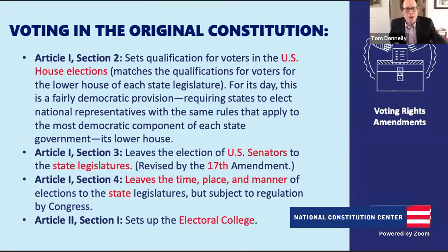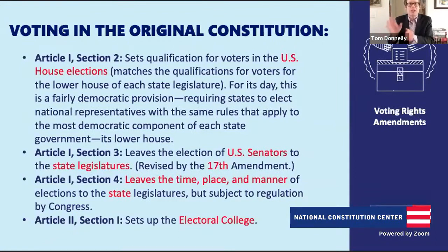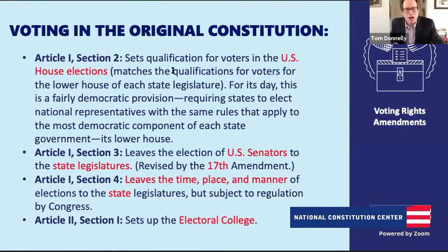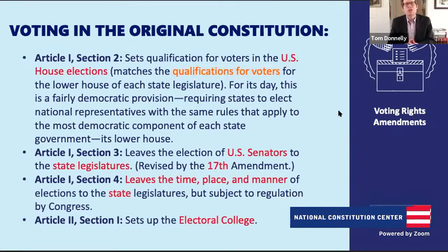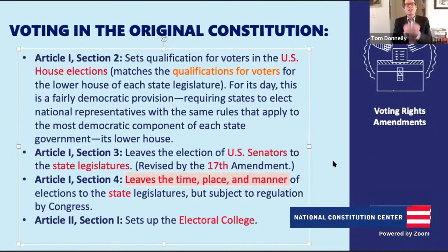Article 1, Section 3 talks about elections to U.S. Senators—how we get U.S. Senators. Under the original Constitution, Senators were actually selected by the state legislatures. We would change that with the 17th Amendment. Article 1, Section 4 leaves the time, place, and manner of elections to state legislatures, subject to regulation by Congress. This is part of why we have such a variety of different voting rules state-by-state, including when to register, whether to vote by mail, drop boxes, or early voting.